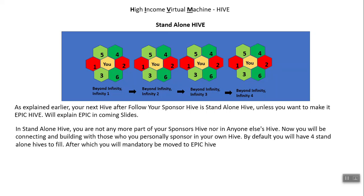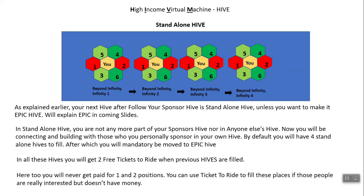In the standalone hive, you are no longer part of your sponsor's hive or anyone else's hive. You will be connecting and building with those you personally sponsor in your own hive. By default, you will have four standalone hives to fill, after which you will be mandatorily moved to Epic Hive. In all these hives, you will get two free tickets to ride when your previous hives are filled.